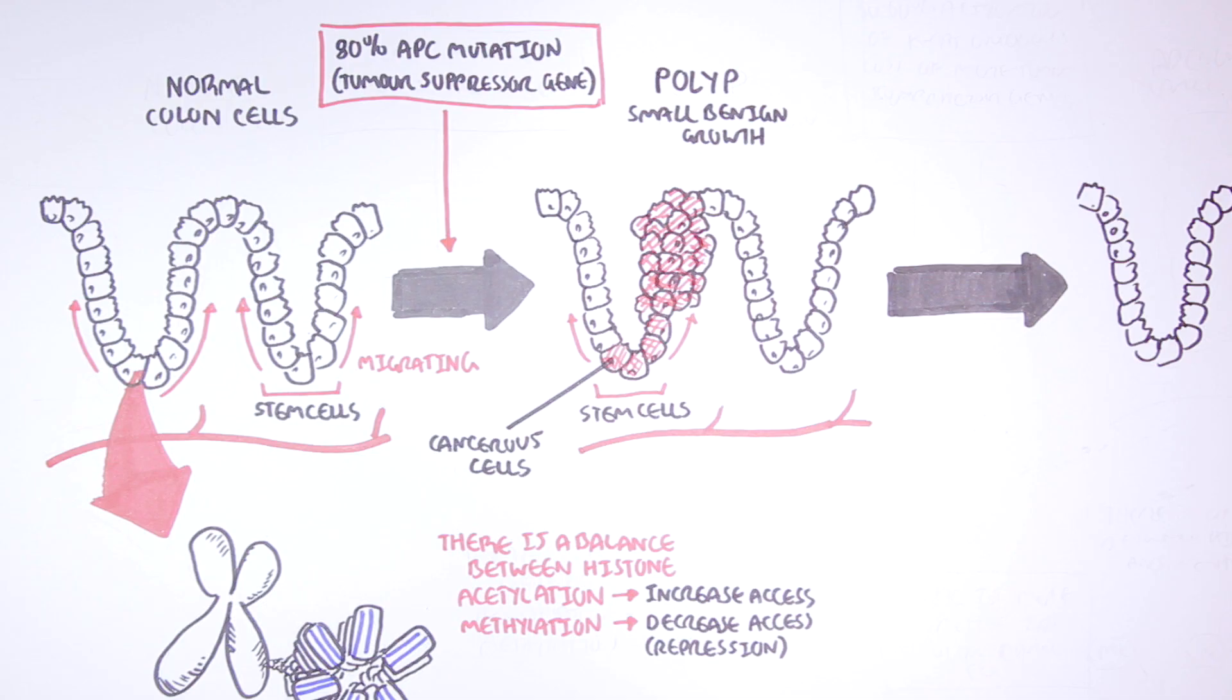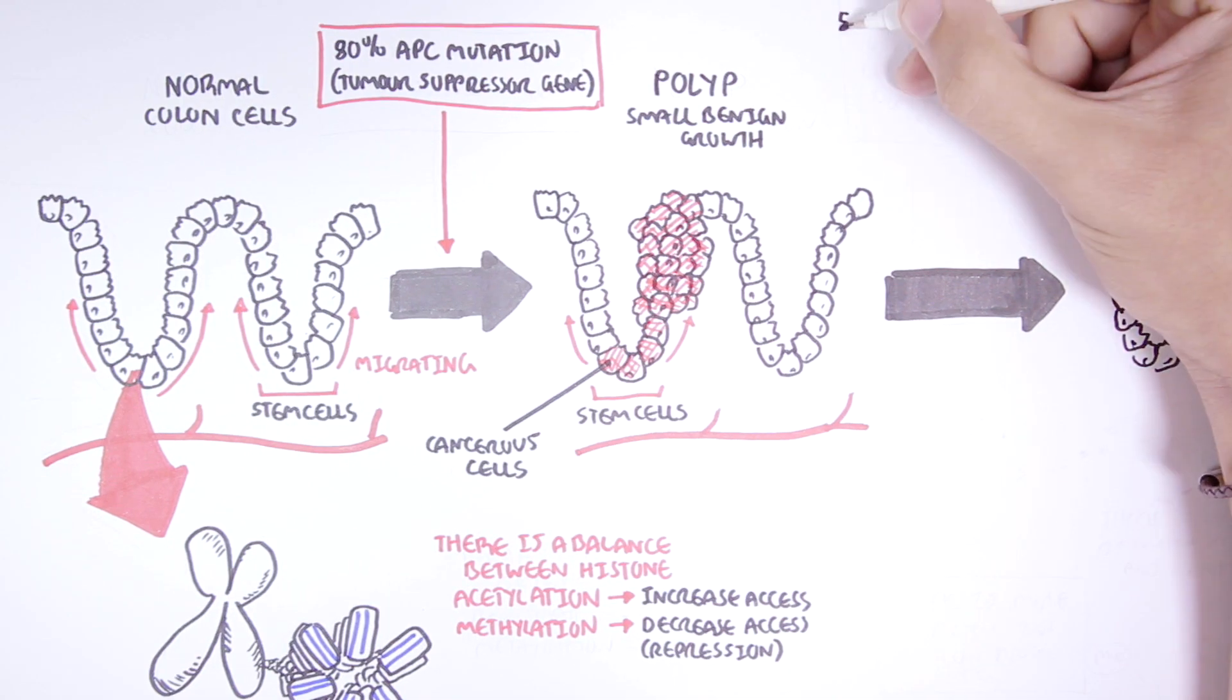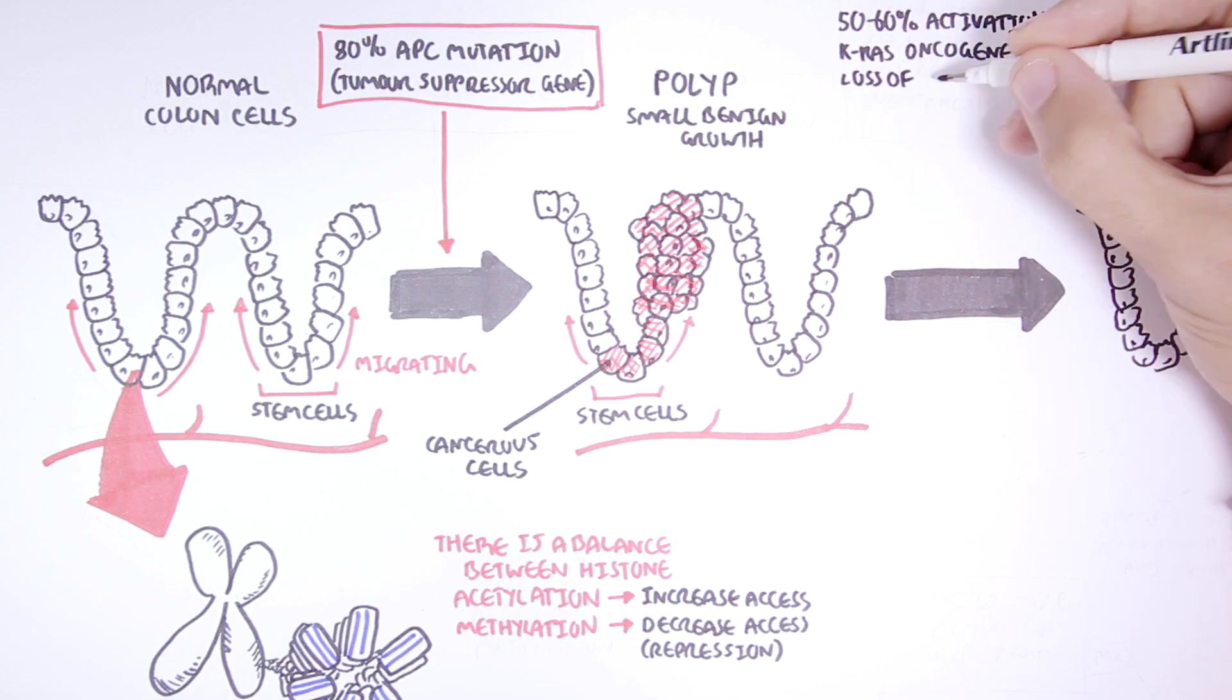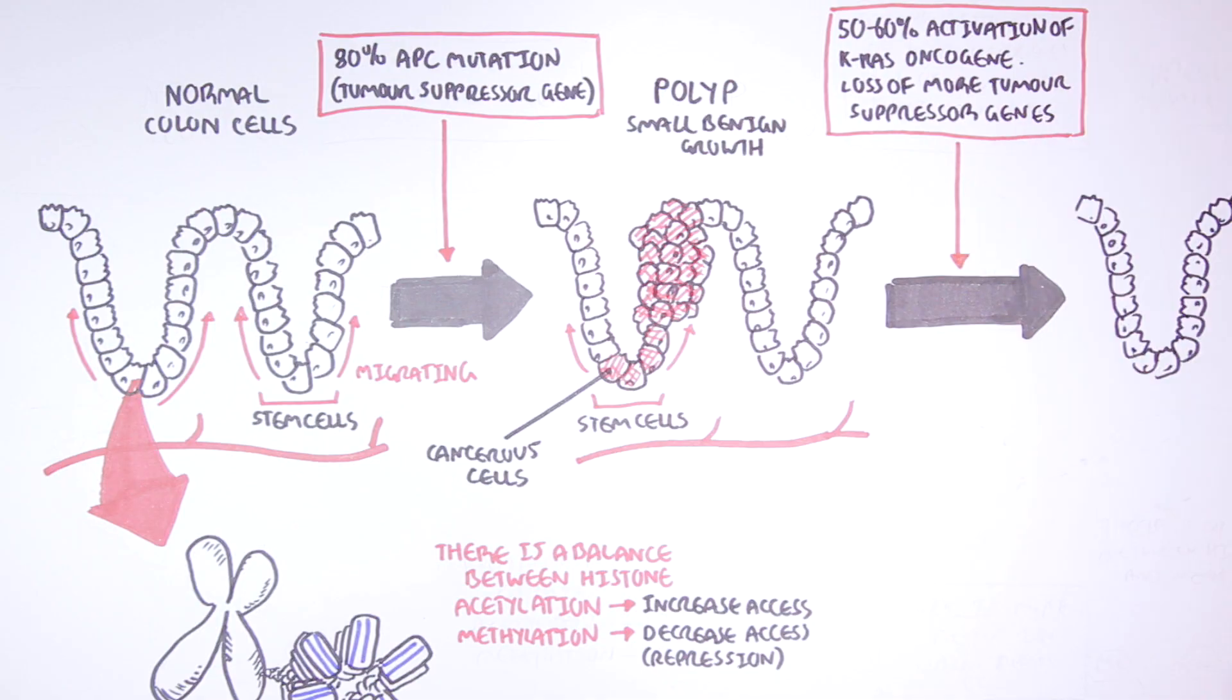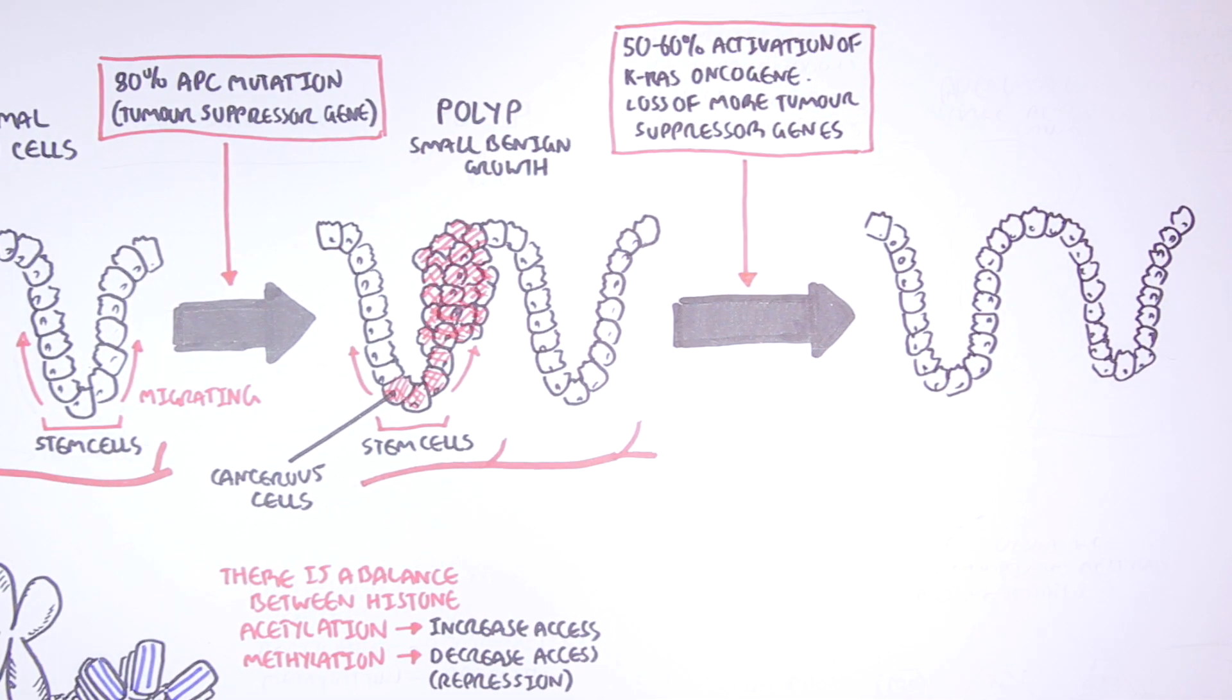However, with more mutations, such as in 50 to 60 percent of colon cancer cases, there is activation of the KRAS oncogene, as well as more mutations of other tumor suppressor genes. Now the KRAS gene normally controls cellular division.